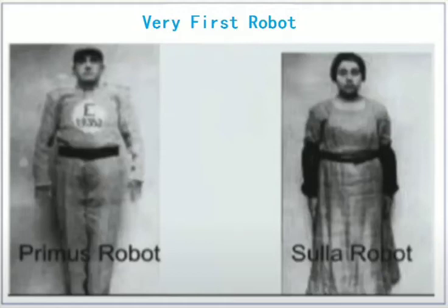This is a kind of object that you're probably all familiar with when you hear the term robot, but I'm going to show you the very first robots. These were the very first robots — they were characters in a play in the 1920s called Rossum's Universal Robots, written by a Czech writer called Karel Čapek.